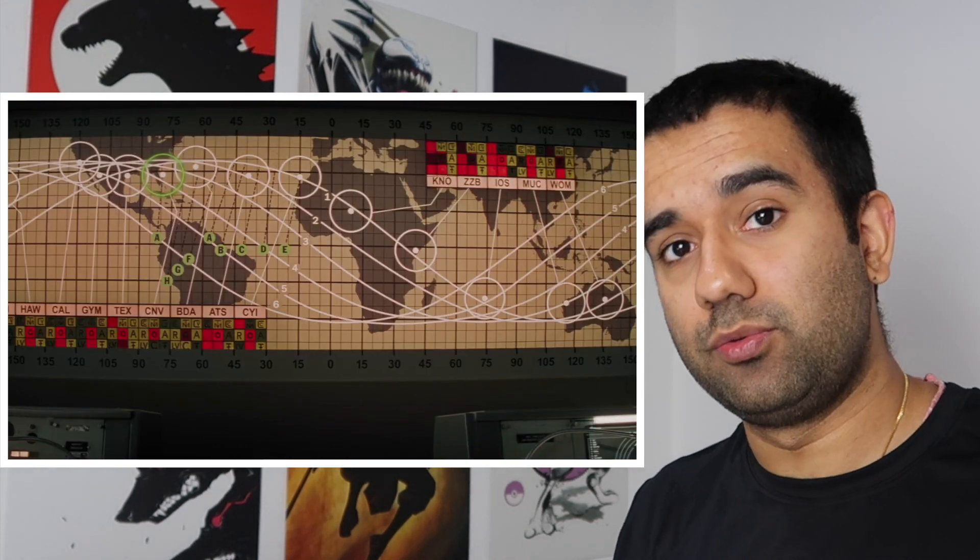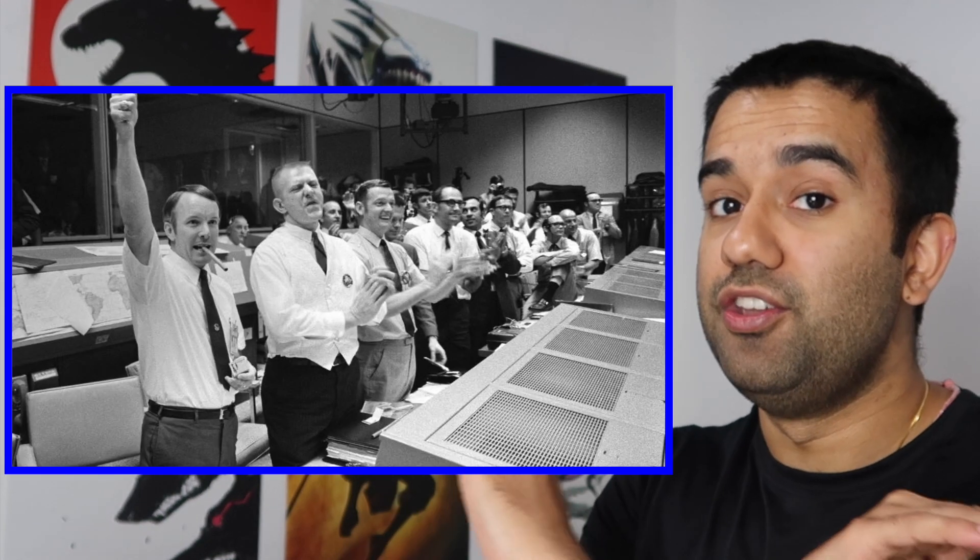Both the lunar module and the service module burned up upon re-entry, but the command module that had the three astronauts inside of it landed in the Pacific Ocean, where they were picked up by the US Navy, returned to NASA with no casualties.